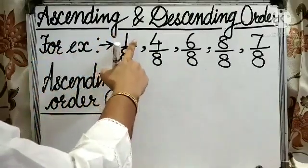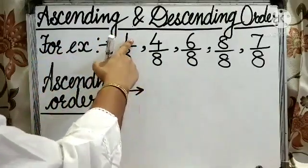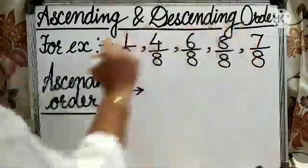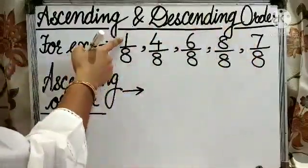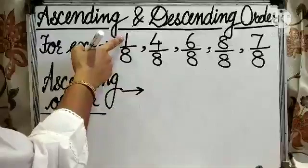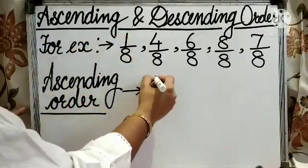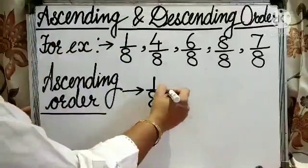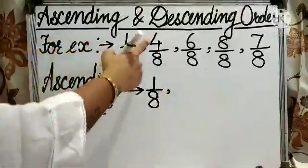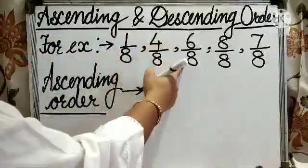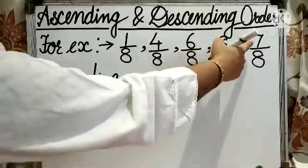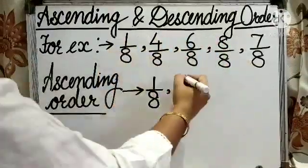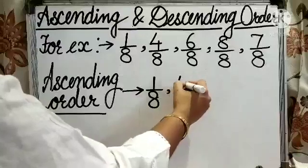Here the numerators are 1, 4, 6, 8 and 7. So 1 is the smallest number, so 1 by 8 will be the smallest fraction. Now we are left with 4 by 8, 6 by 8, 8 by 8 and 7 by 8. Here 4 by 8 will be the smallest fraction now.